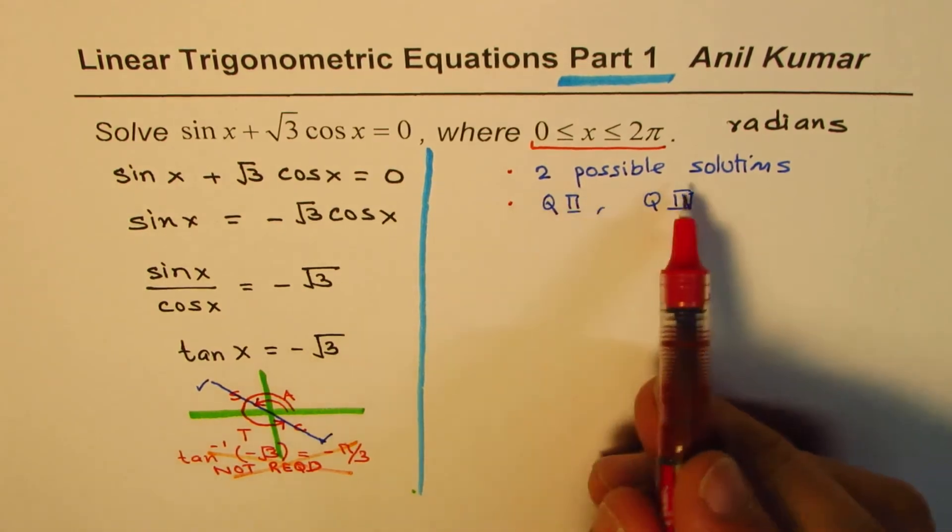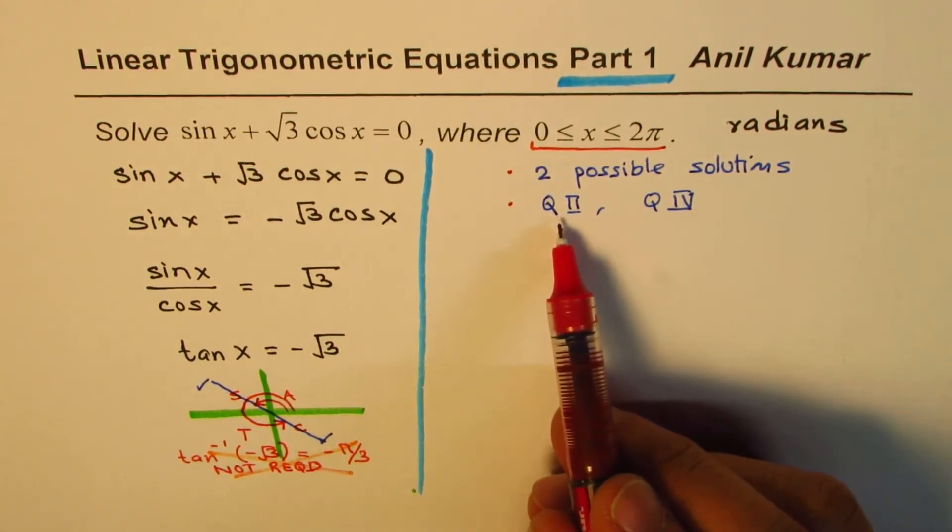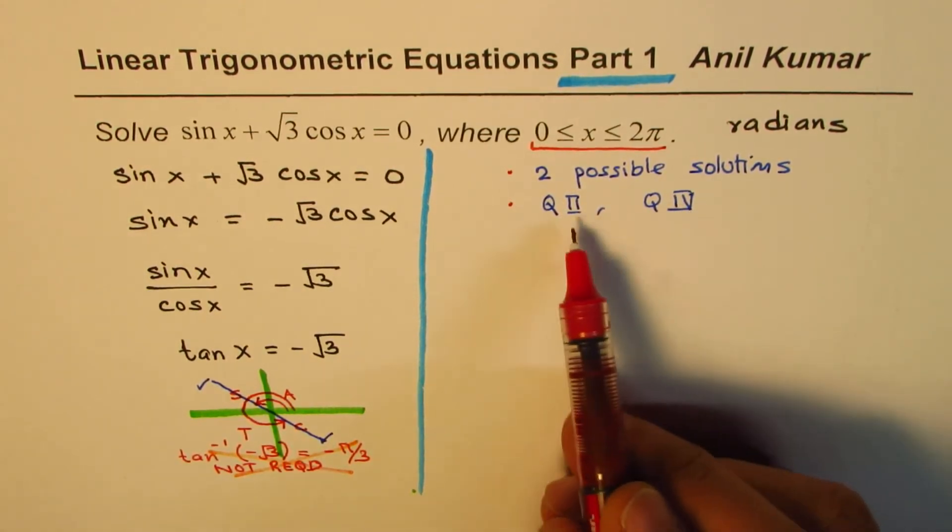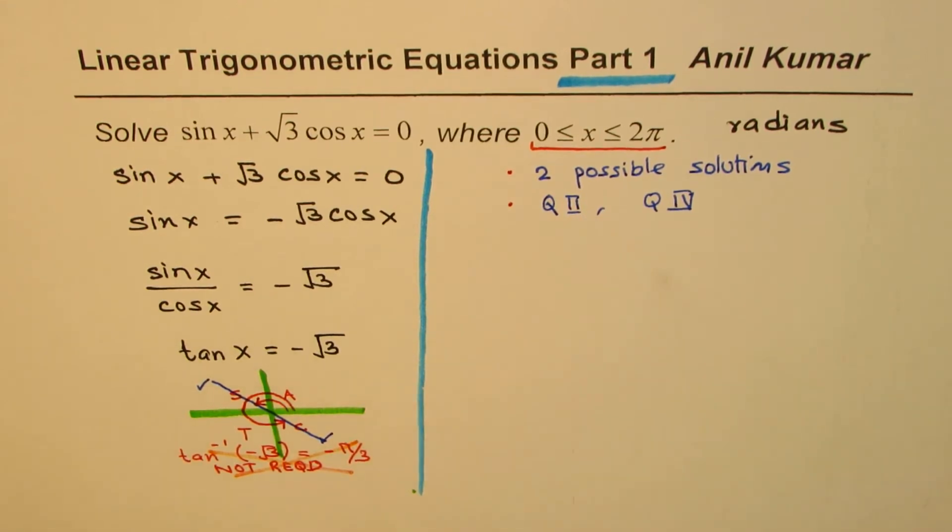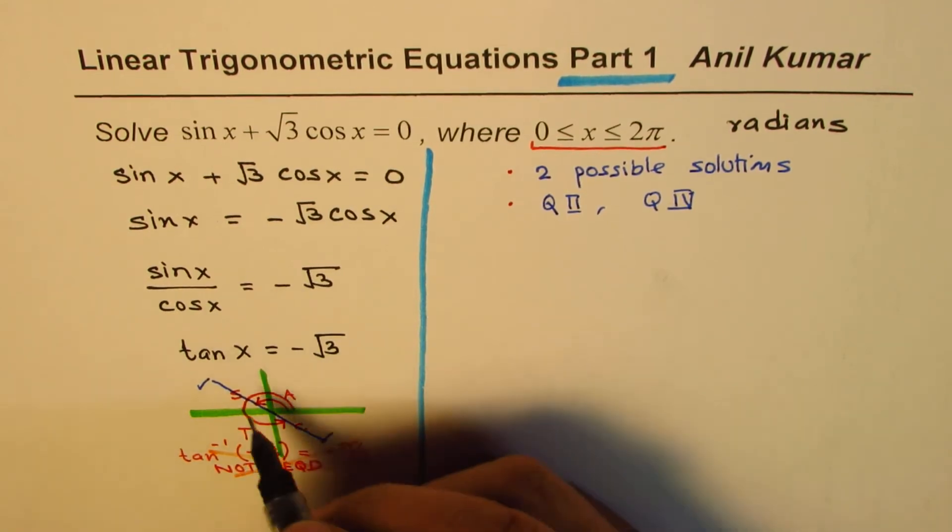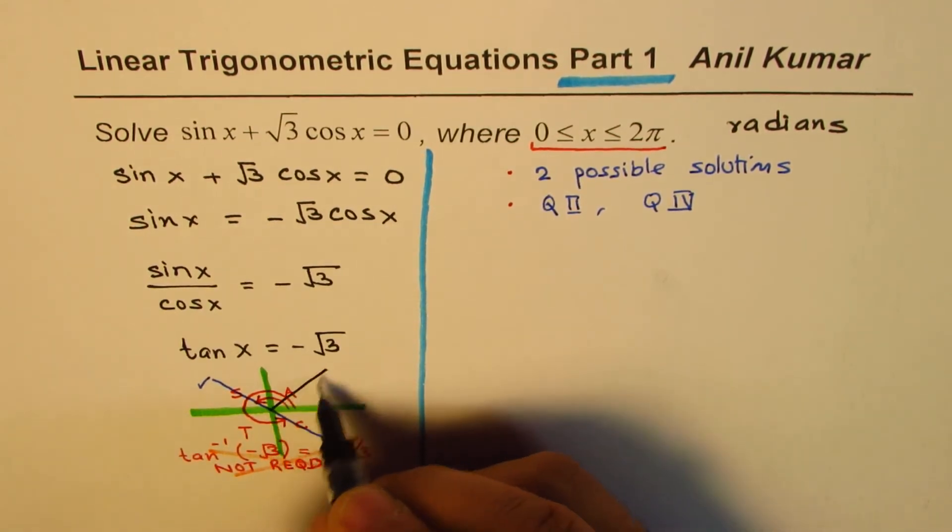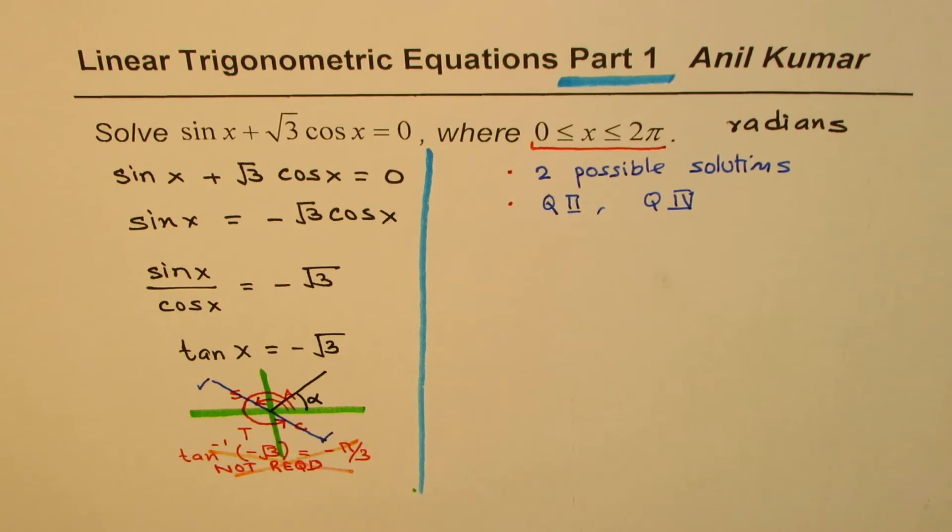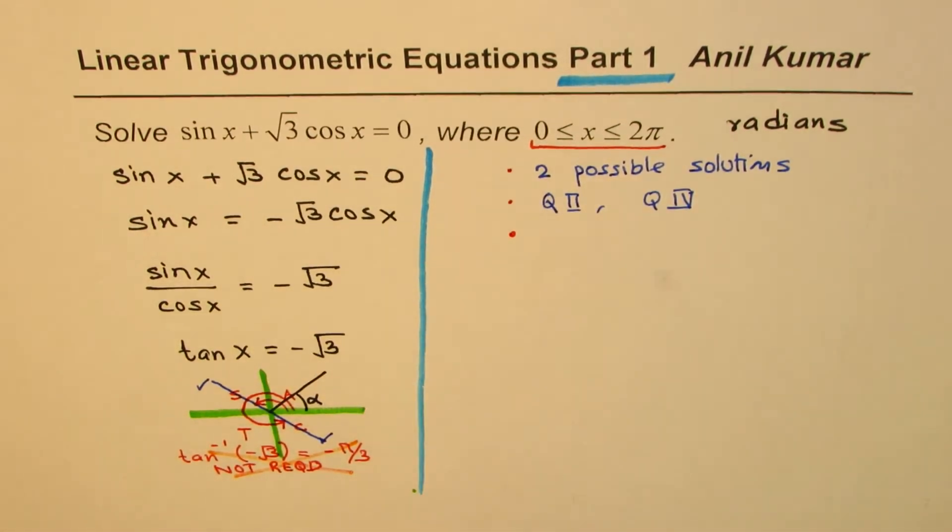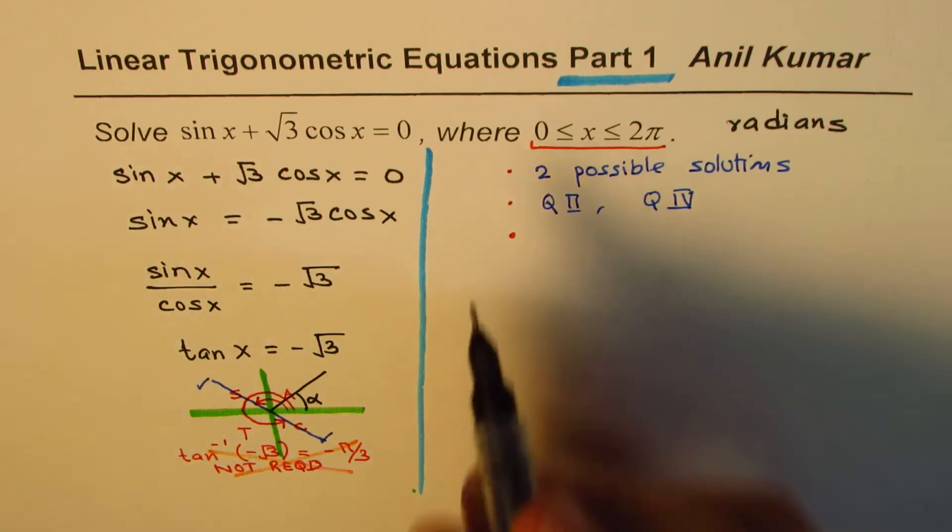We know there are two possible solutions, and these solutions lie in quadrant 2 and 4. Calculator could only give us one solution. So what we really do is we use the calculator to find that one solution, but that one for acute angle. So what we find is the angle alpha. That is to find related acute angle.